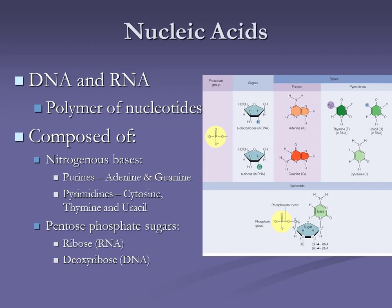When we assemble our nucleic acids, there are going to be three of these phosphates. One of our nucleotides that we assemble into DNA and RNA — and also use for all the energy in our body — is ATP. The T stands for triphosphate. The energy we use for our body is stored in the bonds of those phosphates.